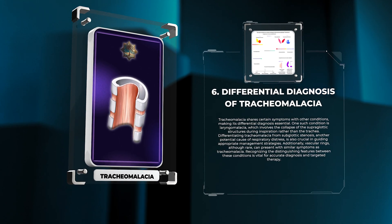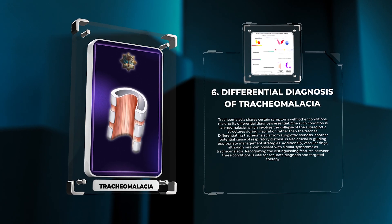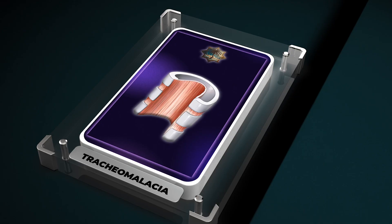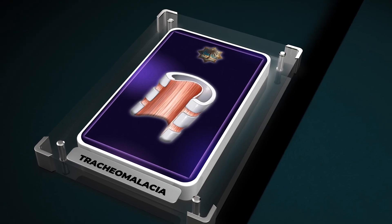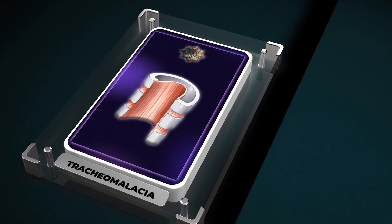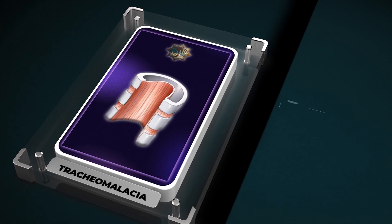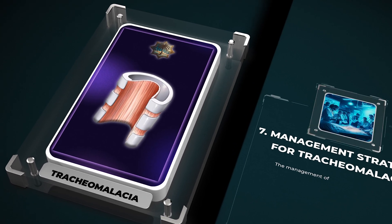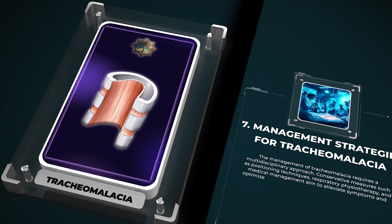Additionally, vascular rings, although rare, can present with symptoms similar to tracheomalacia. Recognizing the distinguishing features between these conditions is vital for accurate diagnosis and targeted therapy.